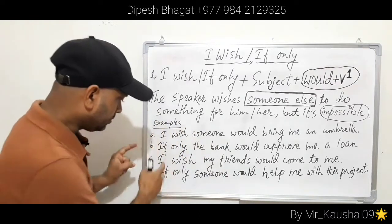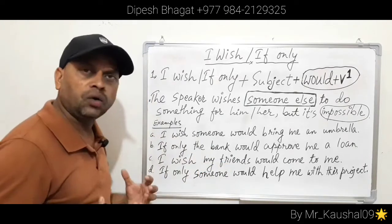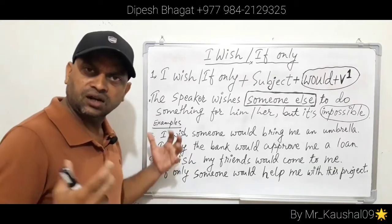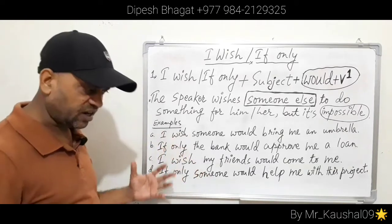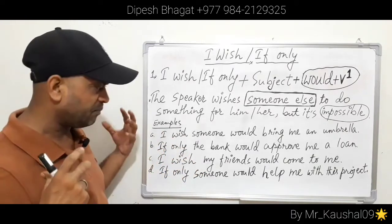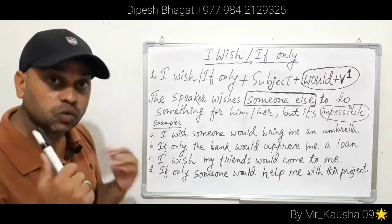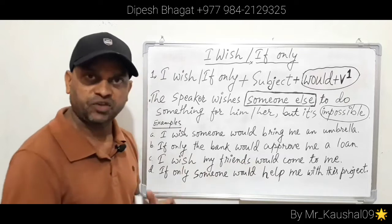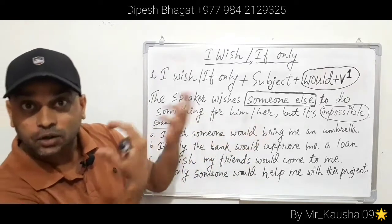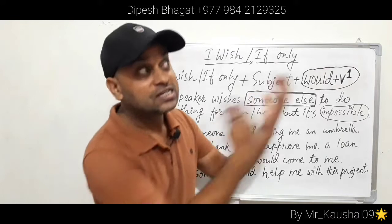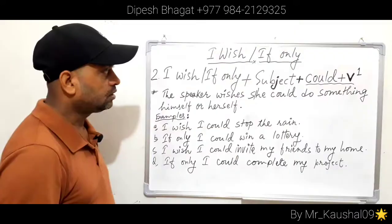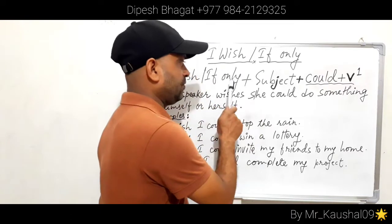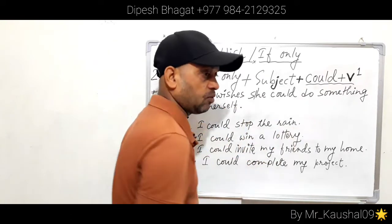Suppose I'm alone at home, feeling lonely during lockdown. In that case I can say: 'I wish my friends would come to me.' Now the second structure is 'I wish / if only + subject + could + verb', where could plus verb is used when the speaker wishes to do something himself or herself.